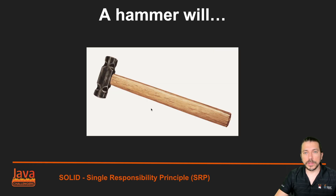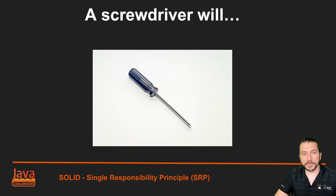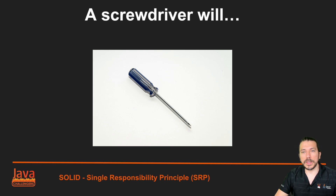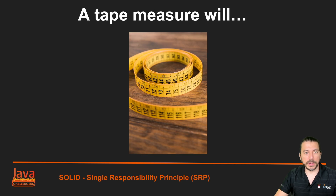Let's look at some analogies to help you understand the single responsibility principle. A hammer will drive a nail into materials — it's good for that, not for random things. A screwdriver is good to insert or tighten screws into materials. And a tape measure is good to measure the length between two points.